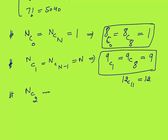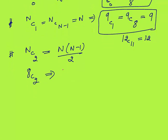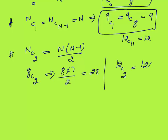NC2 is very important and the most used one. NC2 equals N into N-minus-1 divided by 2. For example, 8C2 equals 8 into 7 by 2, which is 28. And 12C2 equals 12 into 11 by 2, which is 66. So NC2 equals N(N-1)/2.